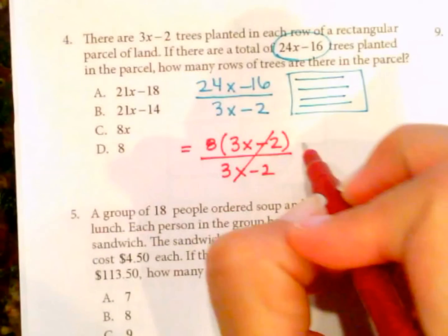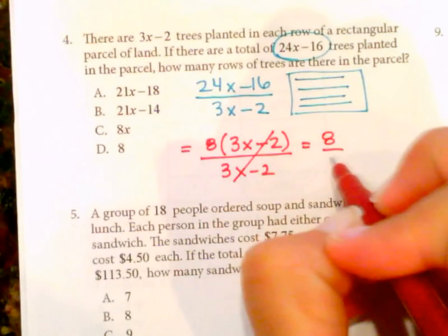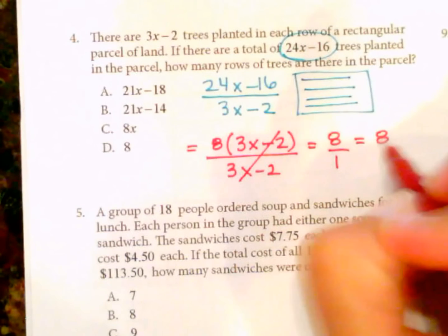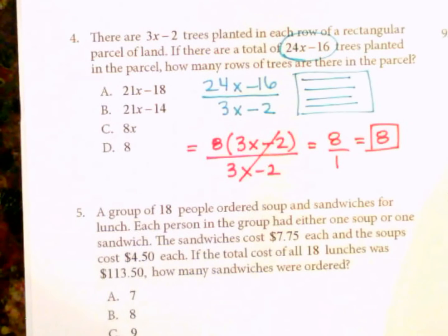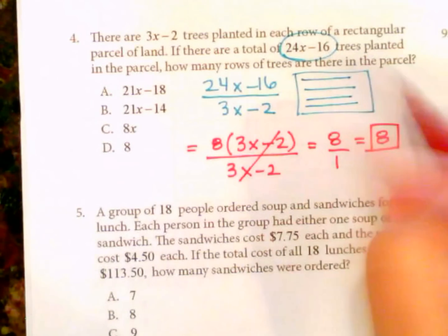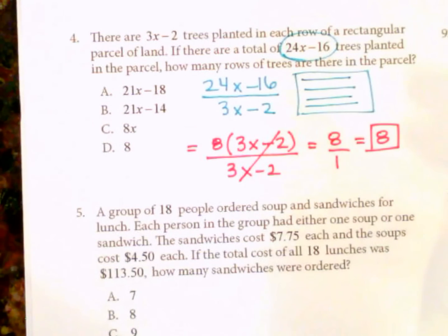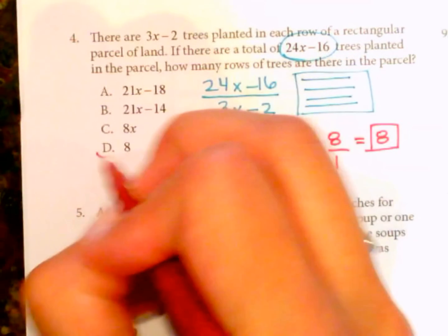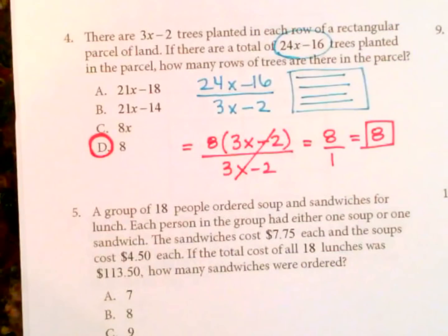Okay, so our answer is going to be 8 over 1. This cancels out to 1, which is just 8. So there's 8 rows of trees. So 8 of these rows times 3x minus 2 gives us an area of 24x minus 16, basically is the gist. So our answer is D, 8.